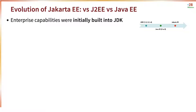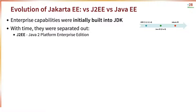In the earlier versions of Java, most of the enterprise capabilities were directly built into the JDK — the Java Development Kit — into the Java language itself. However, over time, they were separated out under the umbrella of J2EE, the Java 2 Platform Enterprise Edition. Things like servlets, JSPs, and EJBs — all the standards around these — were created under J2EE and separated out from the JDK.